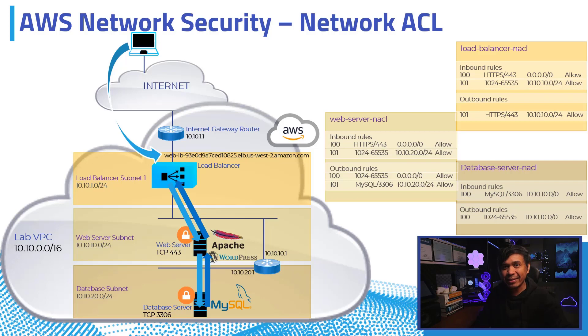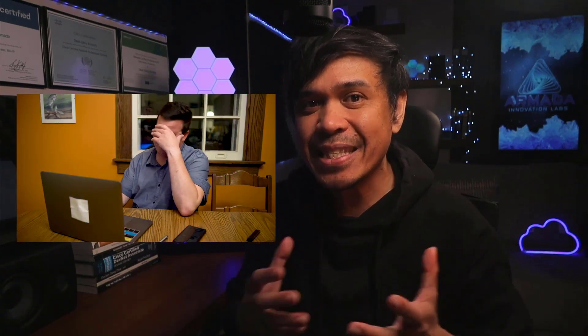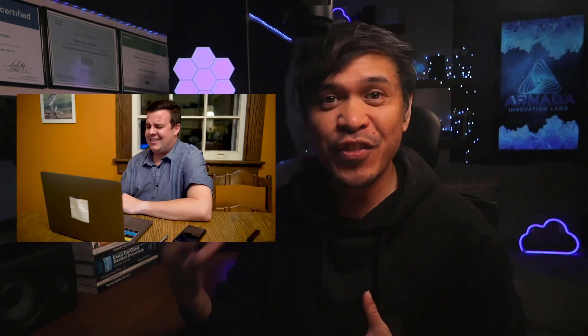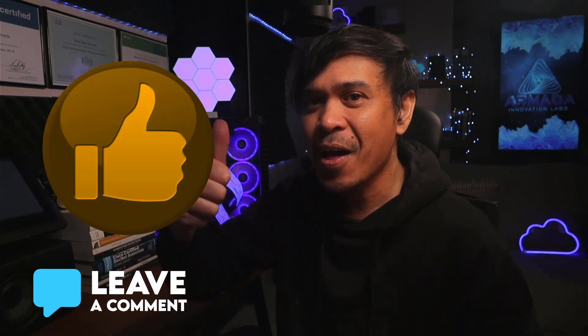And finally, also from the load balancer NACL, we allowed the return traffic back to the client. I hope you have learned something, as many AWS professionals find this topic really confusing. This is actually kind of basic if you are into networking, specifically in data center networking with application load balancers. Comment below if you have any questions and don't forget to hit the like button.